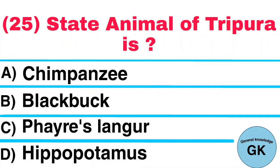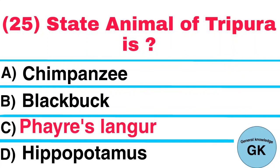Question Number 25. State Animal of Tripura is: A. Chimpanzee, B. Black Buck, C. Fares Lingur, D. Hippopotamus. Answer: Fares Lingur.